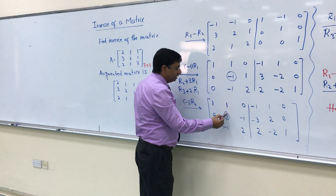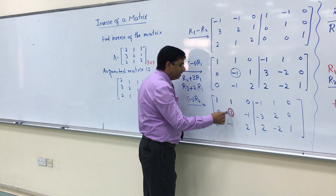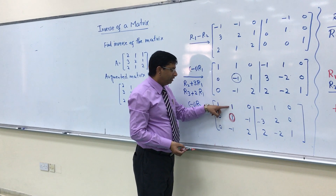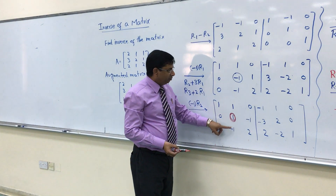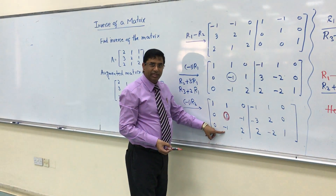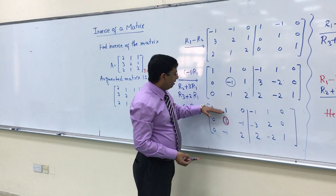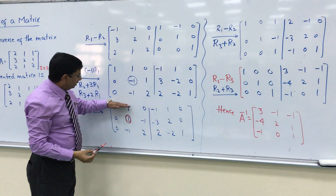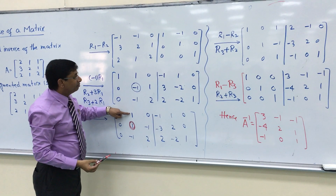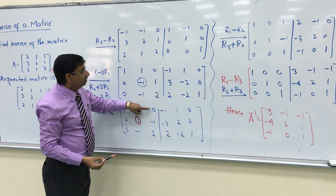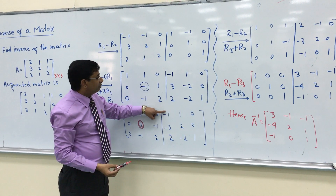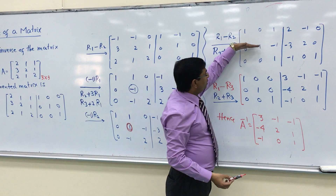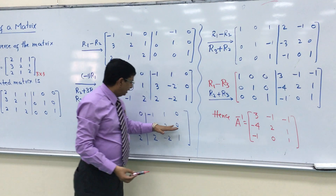Now this diagonal entry is 1. Our next target is to get 0s above and below this 1 by applying row operations. If I subtract R2 from R1, can we get 0 here? Yes. So I write R1 minus R2. Subtracting gives 0. R2 stays as it is without any change.